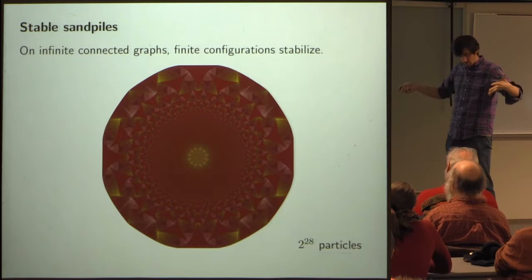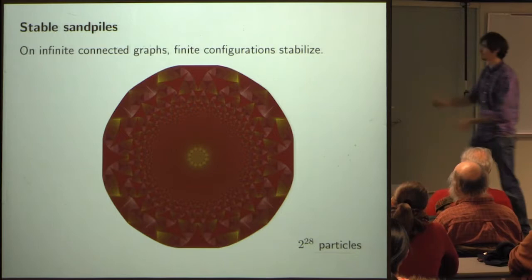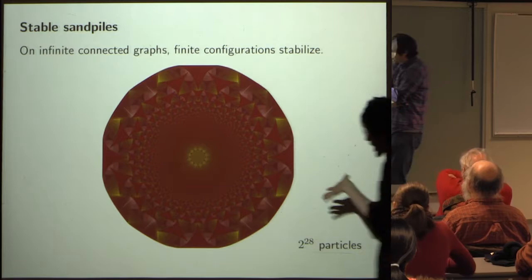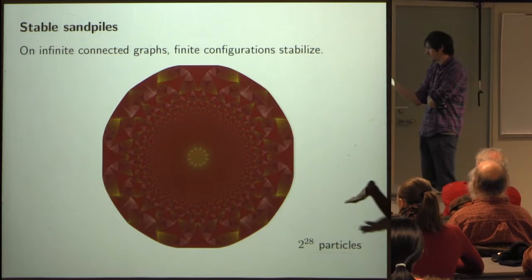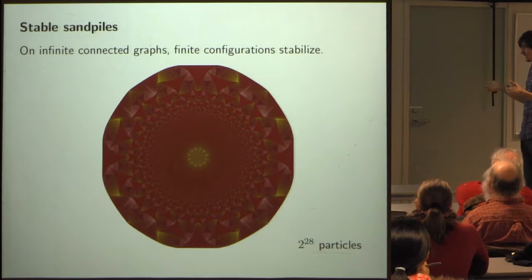Somehow, we start with this simple rule — essentially just a cellular automaton — we plug in some huge number of chips, and we get this curious output, which is an approximation of some fractal image. The natural question is: why does this fractal appear? What is it about the dynamics that's producing this fractal image?